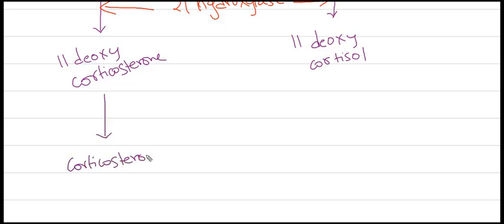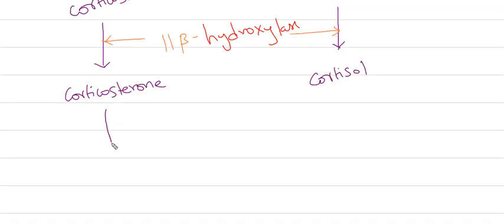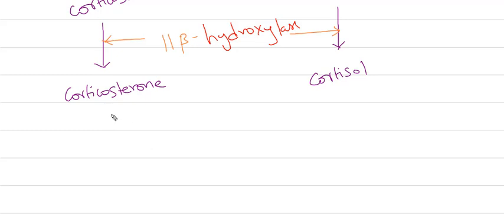From 11-deoxycorticosterone we get corticosterone, and from 11-deoxycortisol we get cortisol. Both of these conversions are catalyzed by 11-beta hydroxylase. From corticosterone, we get aldosterone via aldosterone synthase, which is a mineralocorticoid.